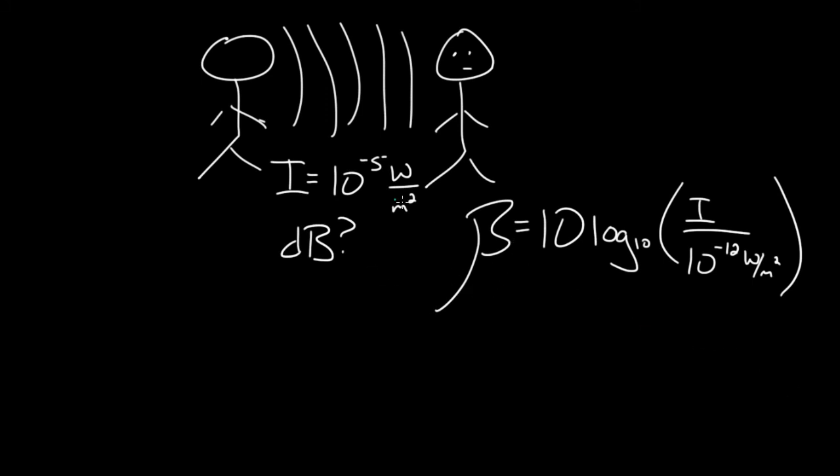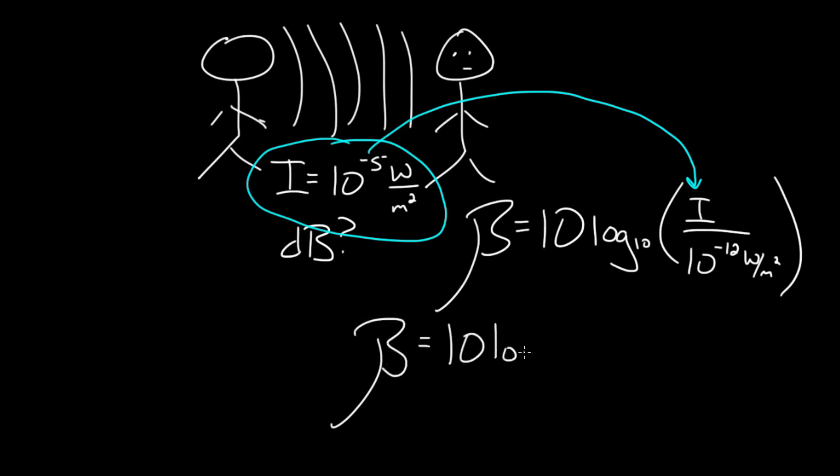10 to the negative fifth is my intensity, so I plug this into here. And I'm going to get beta equals 10 times the log base 10 of 10 to the negative fifth, because that's my intensity, divided by 10 to the negative 12th. Now, these are both watts per square meter, so those cancel.